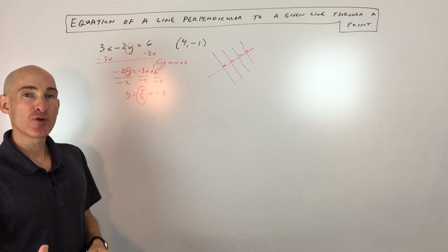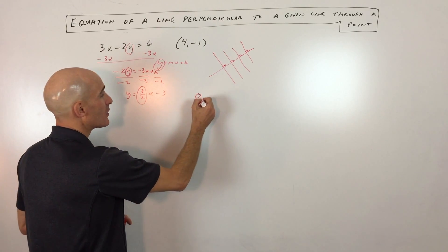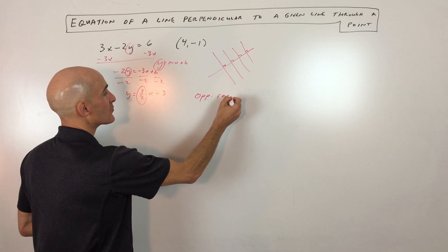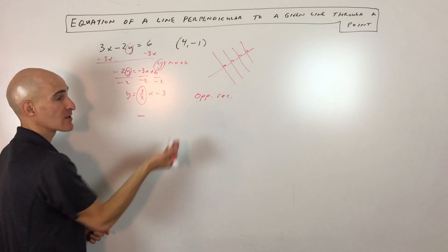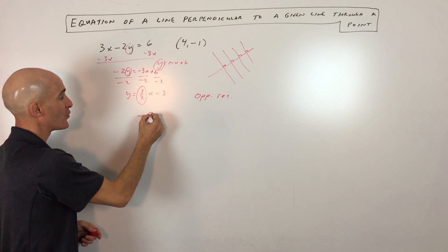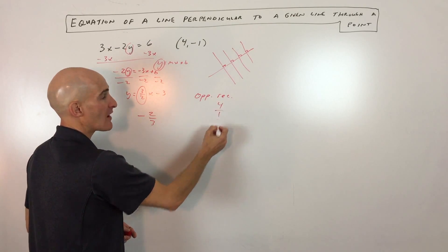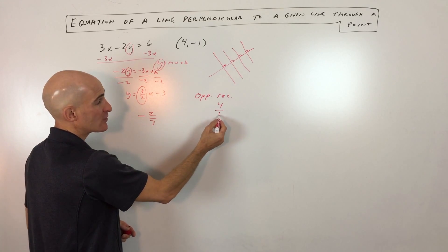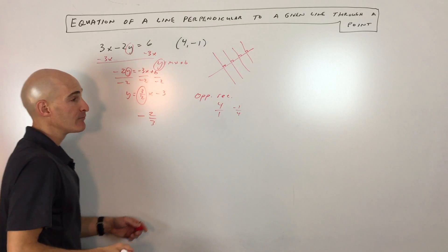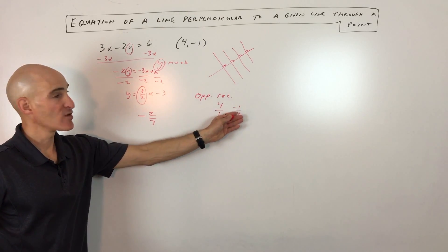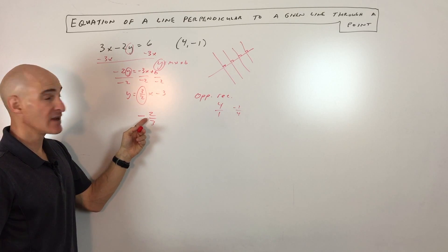When finding a line perpendicular to this line, it's going to have the opposite reciprocal slope. Opposite reciprocal means it's going to be the opposite sign — negative — and we flip the fraction over, so it becomes 2 thirds, making the perpendicular slope negative 2 thirds. If you get a whole number, just put it over 1, flip it, and make it the opposite sign.